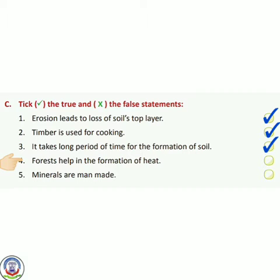Number 4 — forest help in the formation of heat. जंगल जो होता है वो heat को form करने में help करता है। No — forest तो climate को और atmosphere को cool और clean रखता है। So we will put a cross.